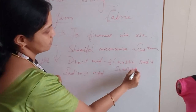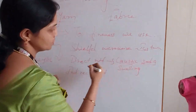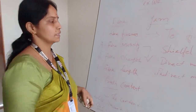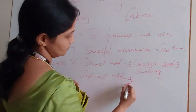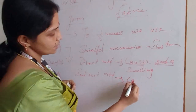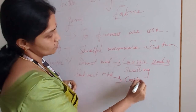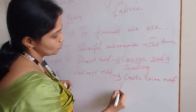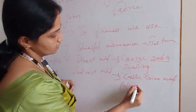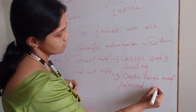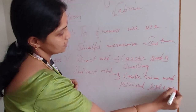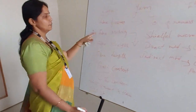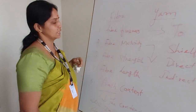In the direct method, we use the caustic soda swelling method. Here we use caustic soda solution to identify the maturity of the particular fiber. The second one is the indirect method. Here we use the caustic carry method, and the polarized light method. These are the two indirect methods used to identify the fiber maturity.